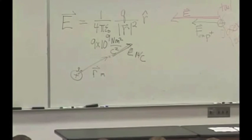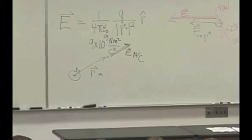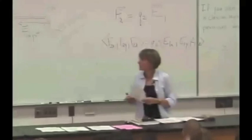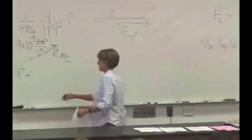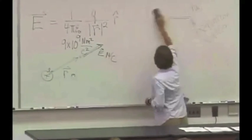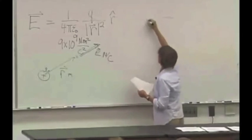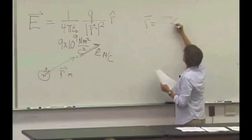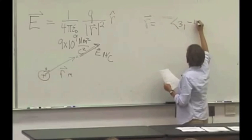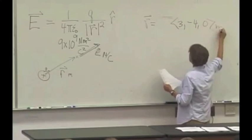Very quickly, we'll do one real quick numerical example here. If this r vector is... Let's say it's 3, negative 4, 0 meters.